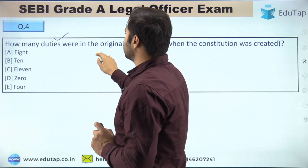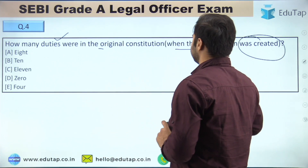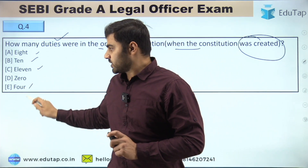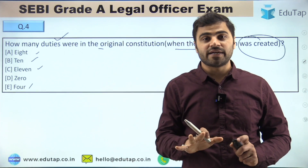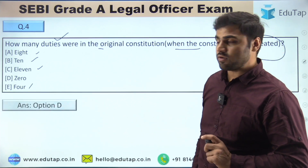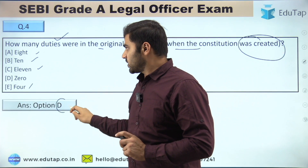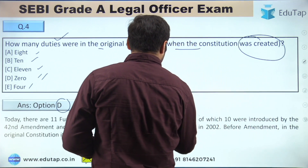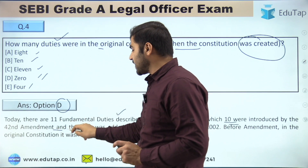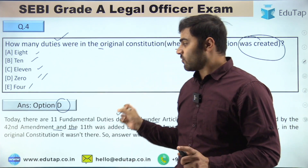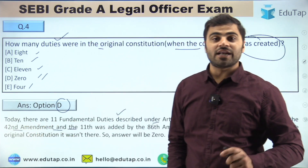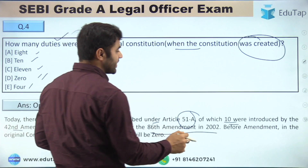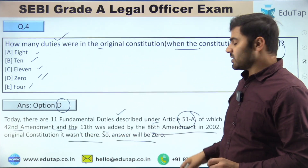Question number 4: How many duties were in the original constitution when it was created? Options are: 8 duties, 10 duties, 11 duties, zero (nil), or 4 duties. The right answer is option D — zero. Today there are 11 fundamental duties under Article 51A, of which 10 were introduced by the 42nd Amendment Act of 1976, and the 11th duty was added by the 86th Amendment in 2002. Fundamental duties were not part of the original constitution before those amendments.